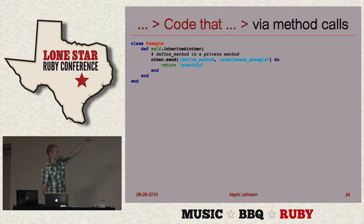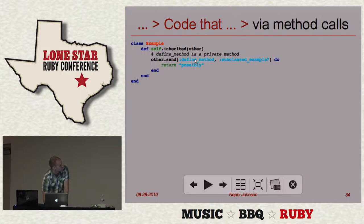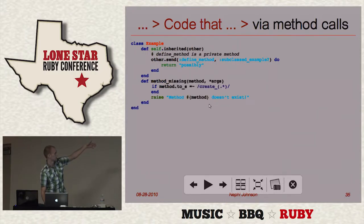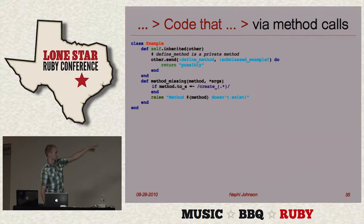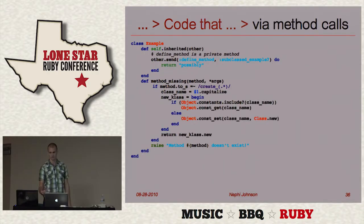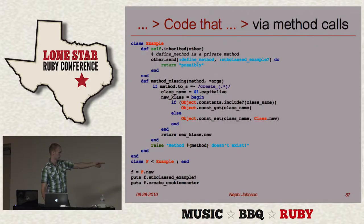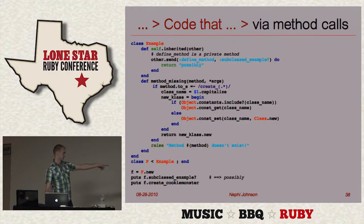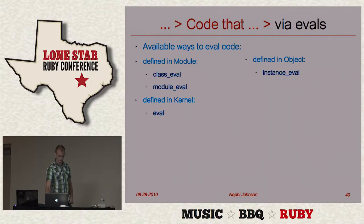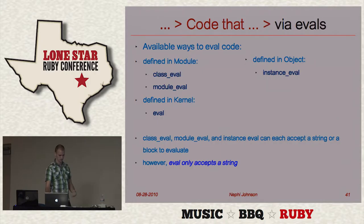Here's an example using the inherited hook again. When our example class gets inherited, we're going to create a method using define_method and add the subclass example method to the inherited class. We're also going to use the method_missing hook — if somebody calls a method that doesn't exist and starts with 'create,' we'll just create the class and return a new instance of it. We inherit from our example class, call the dynamically defined function, and create a cookie monster object — it all works fine.